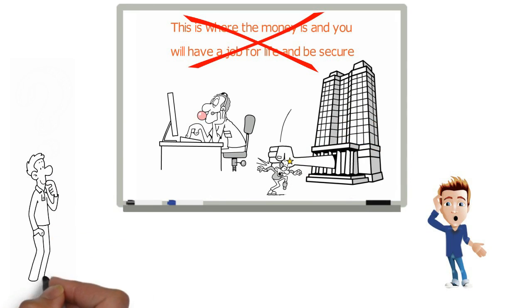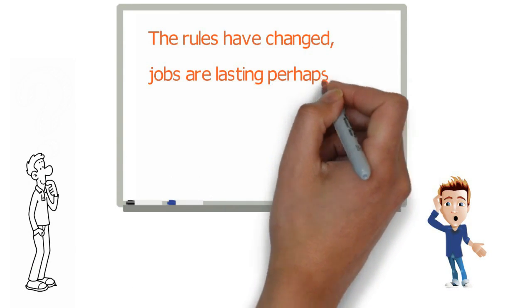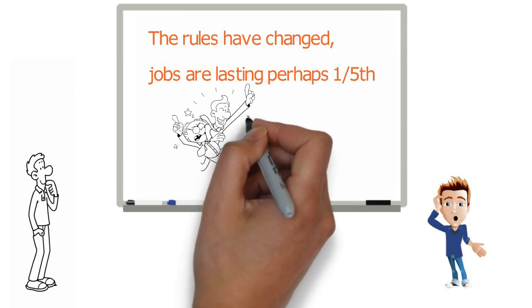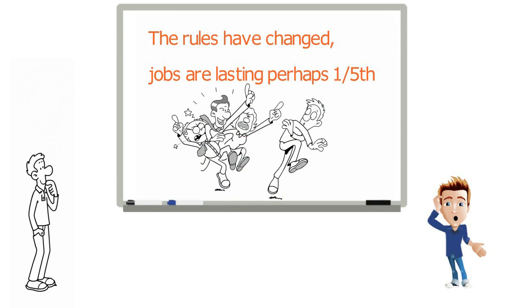Sam was beginning to feel a bit better. He wasn't alone. Dave carried on. The rules have changed. Jobs are lasting perhaps one-fifth as long as they used to, and people are not trying to give bad advice. They just have grown up in a different world, with technology removing the need for lots of jobs.